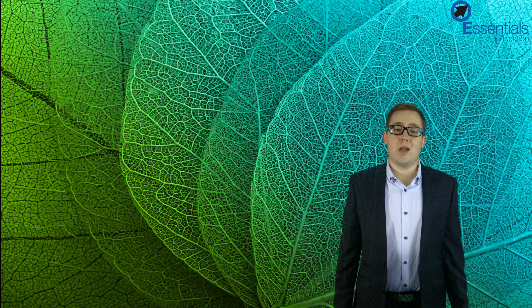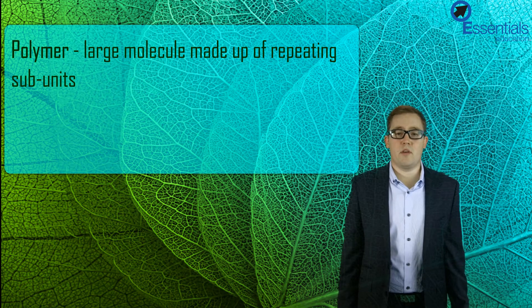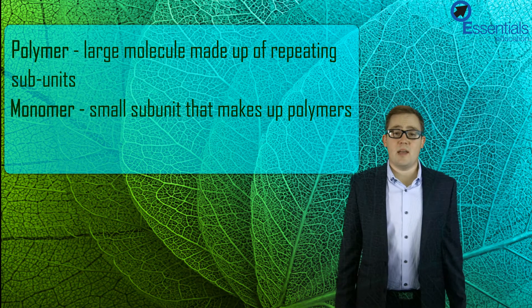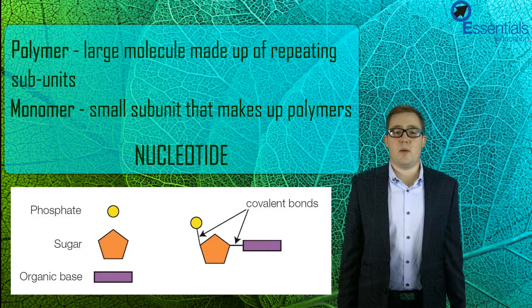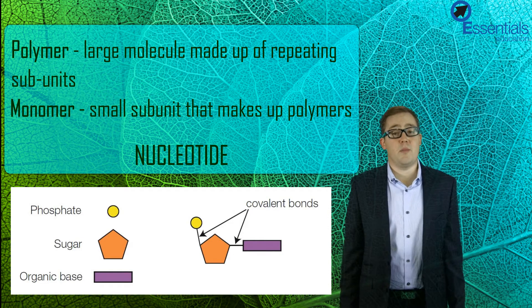DNA is what we call a large polymer, or a molecule made up of repeating subunits of molecules called monomers. In this case the repeating subunit is called a nucleotide, which is made of a single phosphate, a deoxyribose sugar, and a base.